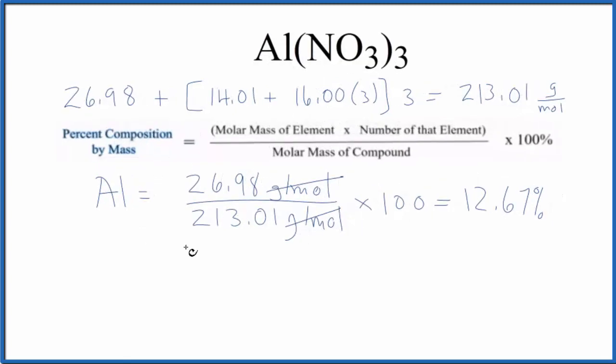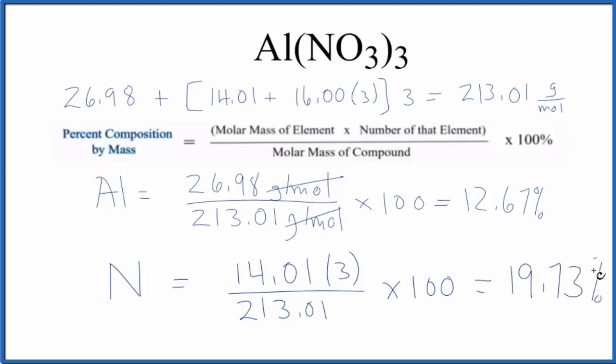Let's do the nitrogen. For nitrogen on the periodic table, 14.01 grams per mole. I won't write them since they cancel out. We have 3 times 1, so we have 3 nitrogen atoms. Then again, we divide by the molar mass of the compound, multiply by 100, and we get 19.73%. That's for the nitrogen.